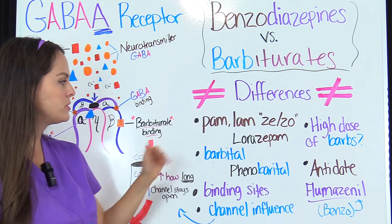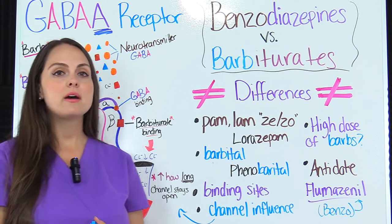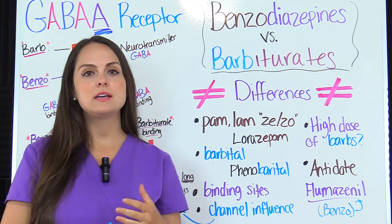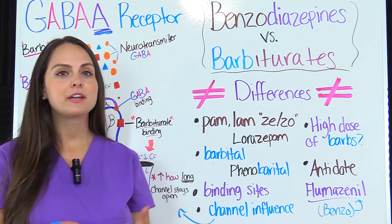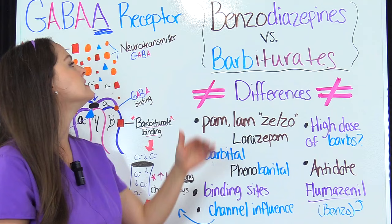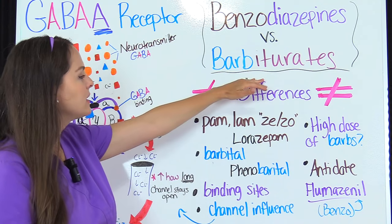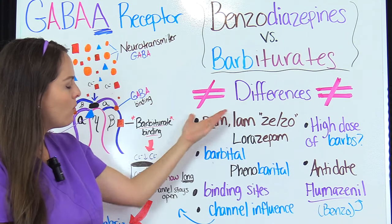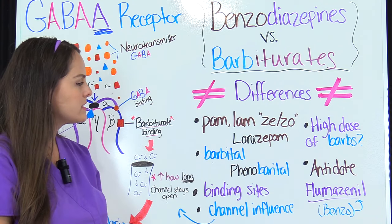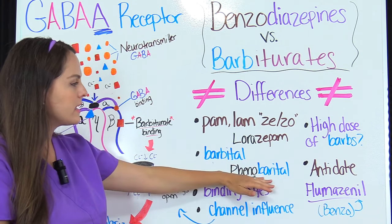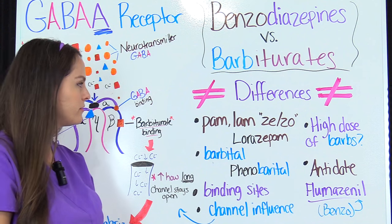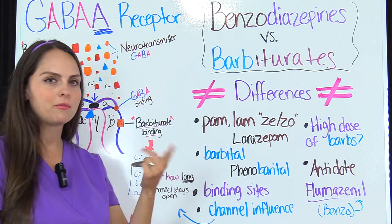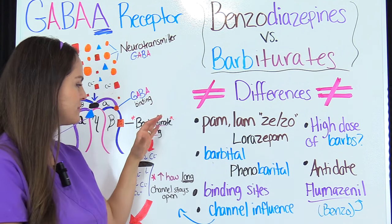With barbiturates, most of those generic names tend to end in -barbital. If you look at the word barbiturates, you see -barbit-. One of those drugs that follows that rule is phenobarbital. Hopefully that will help you recognize those drugs.